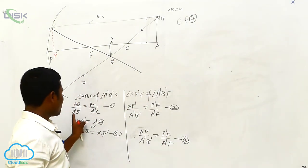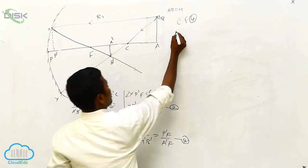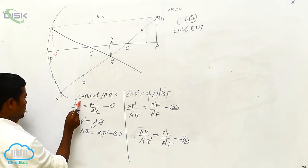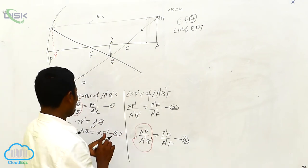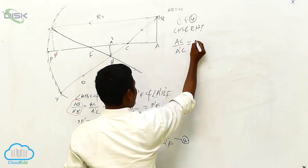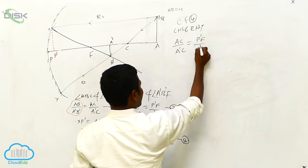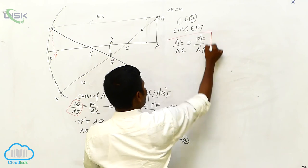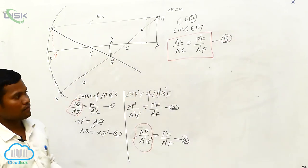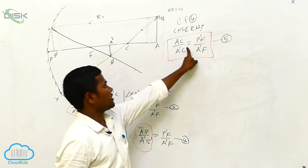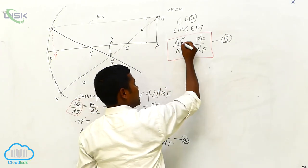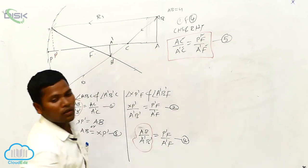Now comparing equation one and equation four — both have the same LHS and RHS terms. Cancelling the common terms AB / A-dash B-dash, what remains is: AC / A-dash C equals P-dash F / A-dash F. This is equation five. If you know AC, A-dash C, P-dash F, and A-dash F, we can derive the mirror formula.